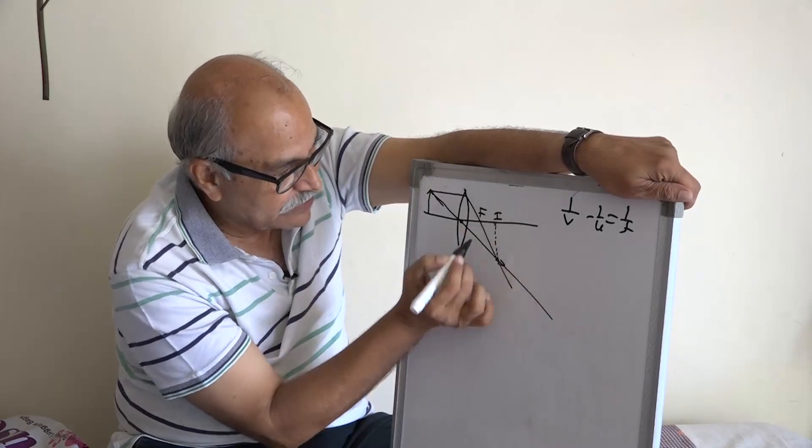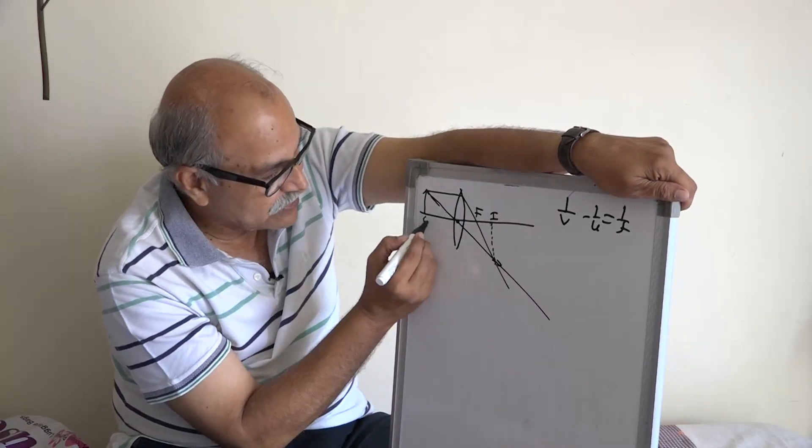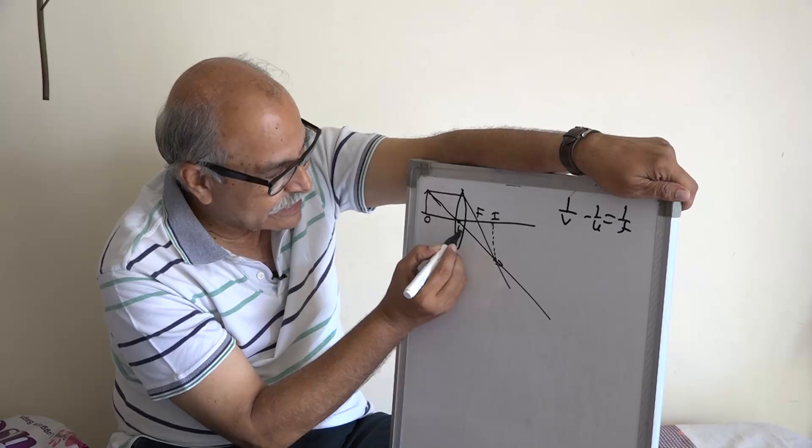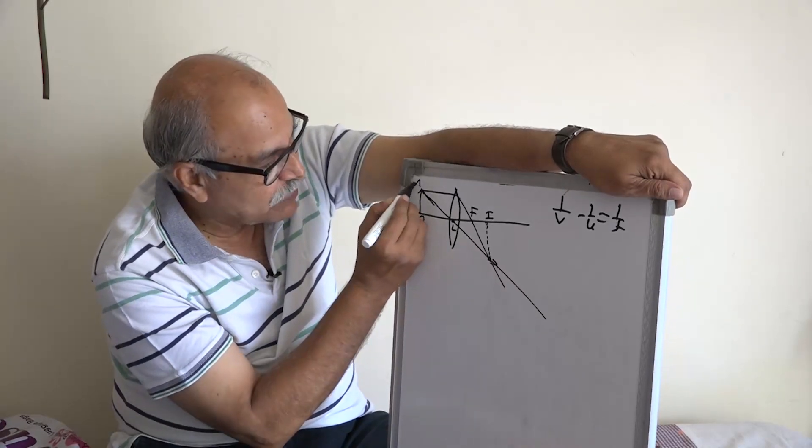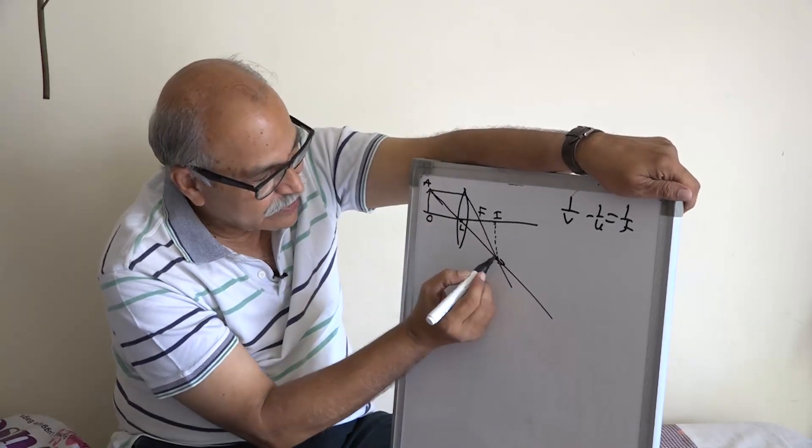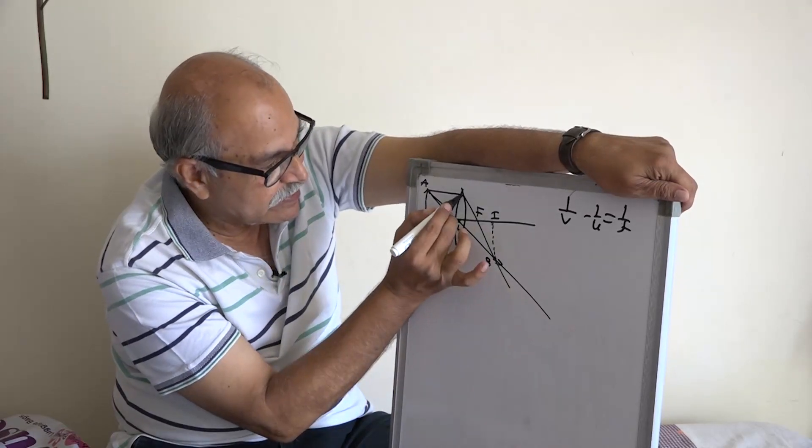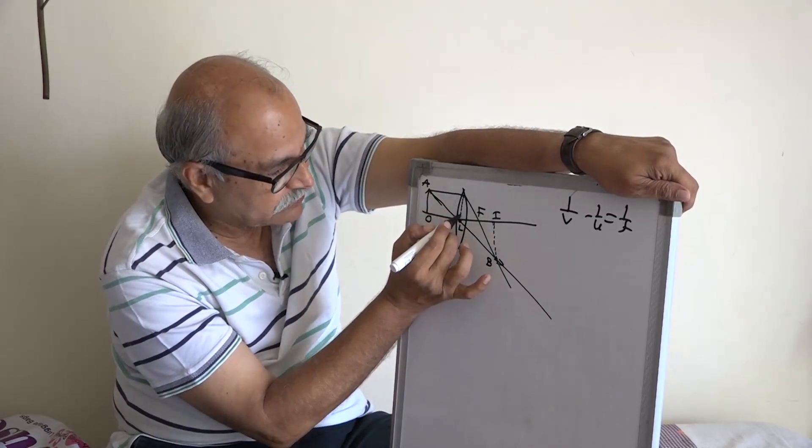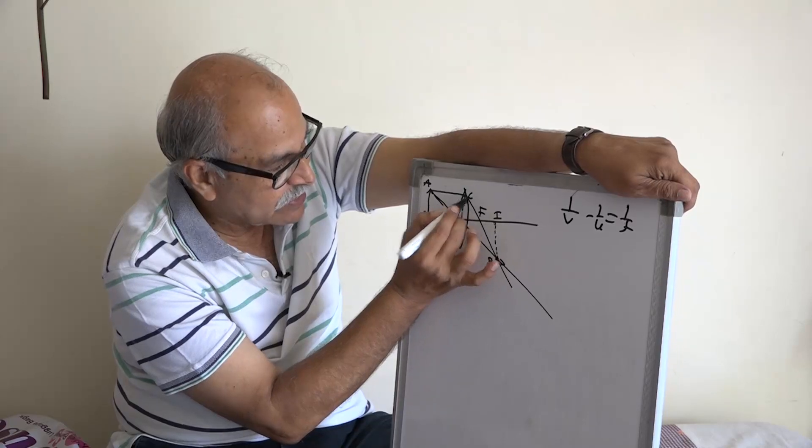It meets here and this is the image. Image position is I, object position is O, lens center is L, this point let us say A and this point let us say B and then this point here you can write it C.